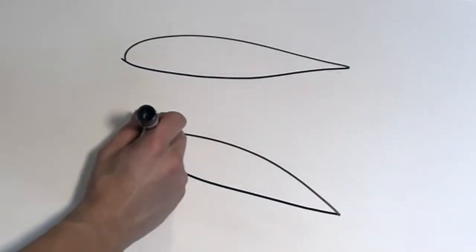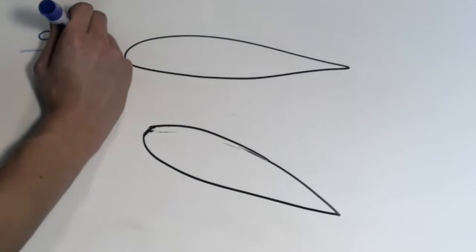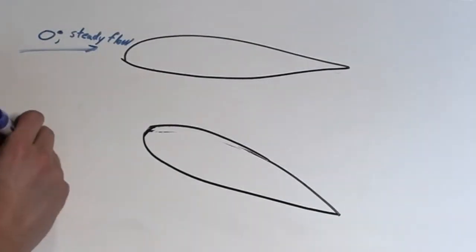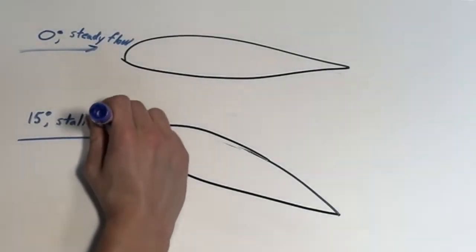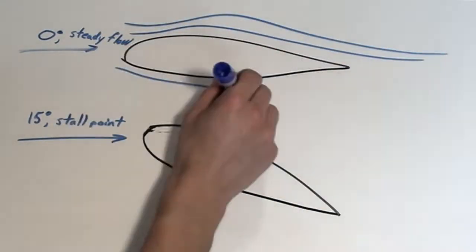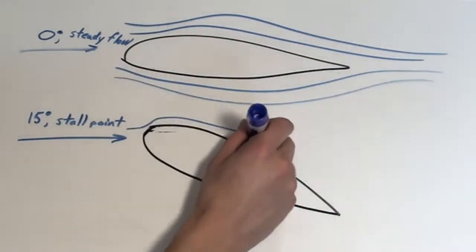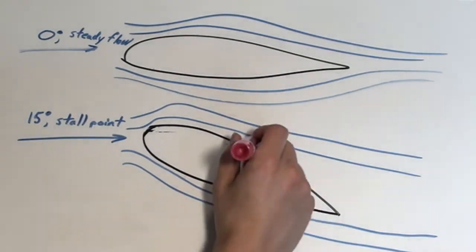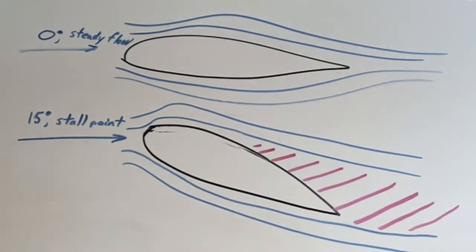An important attribute of understanding the relationship between angle of attack and lift is the occurrence of stalls. A stall is a condition where the angle of attack increases beyond a certain point such that lift begins to decrease. The angle at which this occurs is called the critical angle of attack.